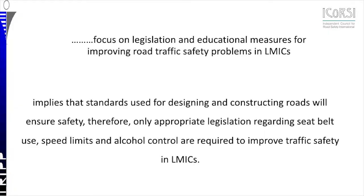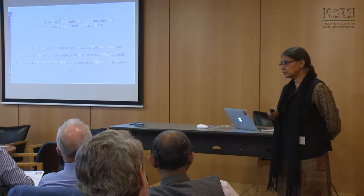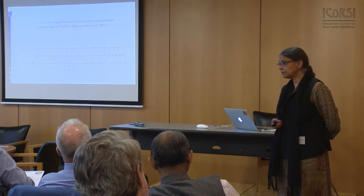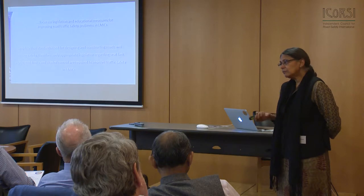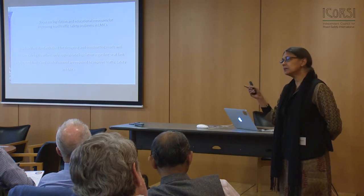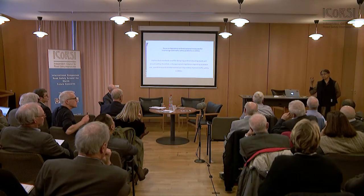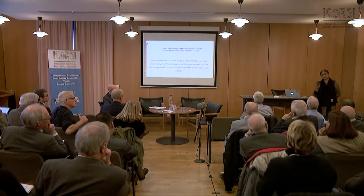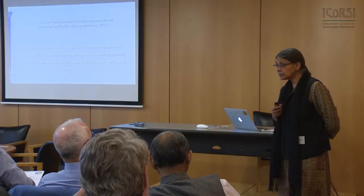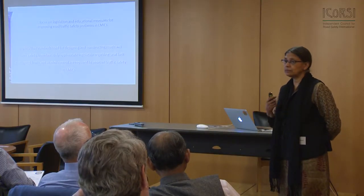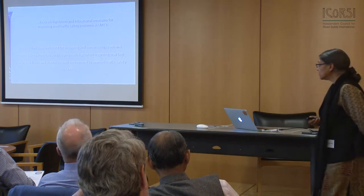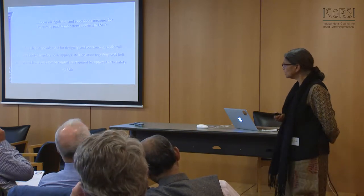It struck me that in the published literature, we don't find discussion about evaluations and evidence of other kinds of measures. Have we changed road designs? Have we changed city designs? What kinds of standards are we looking at? Hardly any. In this meta-summary, if I remember correctly, there were only two studies evaluating the impact of speed humps and one evaluating the impact of pavement.